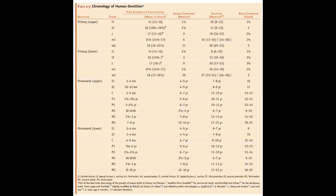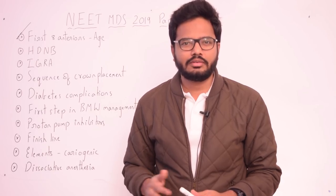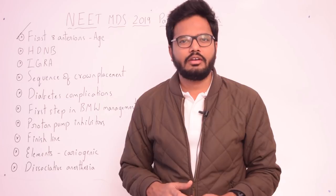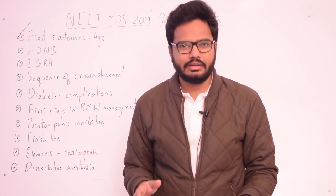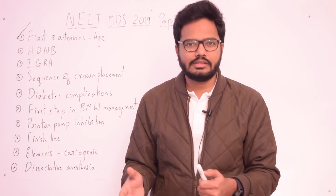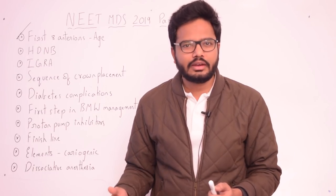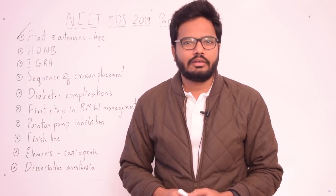By eight to nine years, upper laterals are present as well. So by age eight, you can see all eight anterior teeth. For canines: lower canine erupts at nine to ten years, upper canine around eleven to twelve years. So by eight years, you will find all eight anterior teeth — centrals and laterals — present.